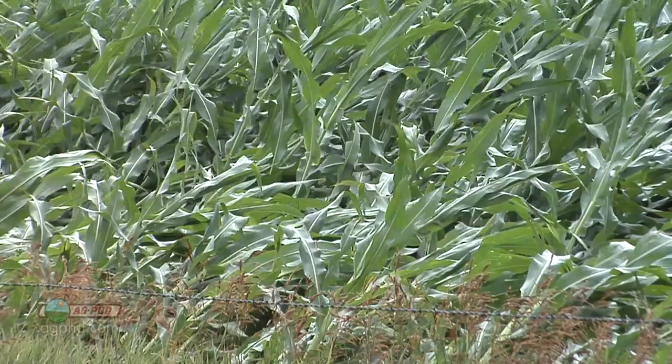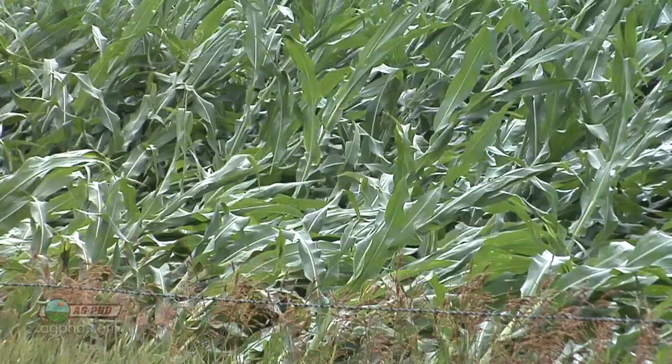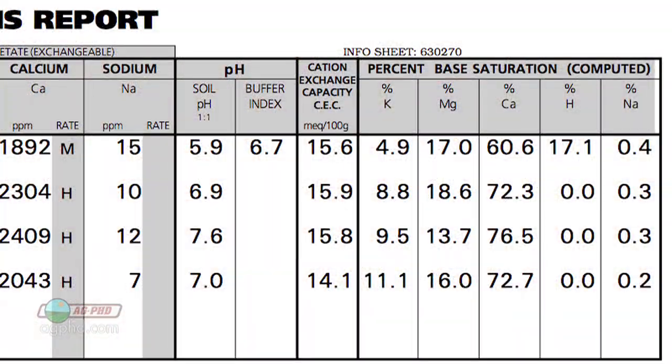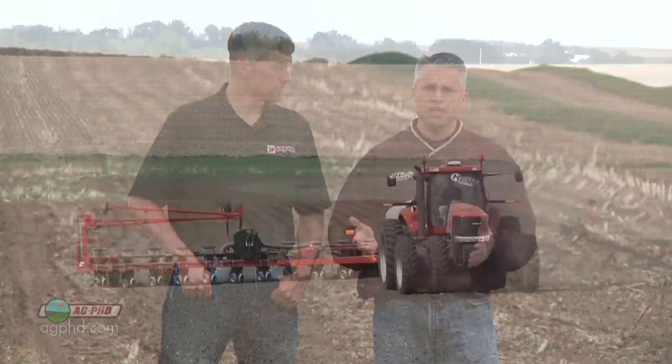Almost every lodging field I've ever been in, there just isn't enough potassium — that's what it all comes back to. You've got to have ample K. Look at your base saturation test: unless your result is in the range of four to eight percent K, you don't have enough. A lot of tests I see are at one and a half, maybe two percent K at the most — that's not even close, and of course you're going to have lodging issues.